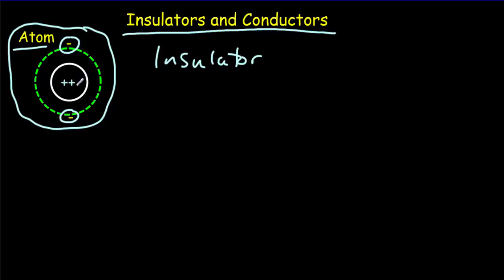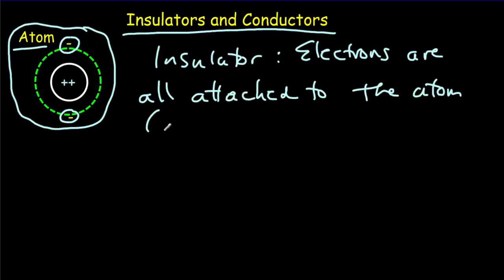And there won't be any charge available to flow. So in an insulator, the electrons are all attached to the atom, so you don't have an ion.